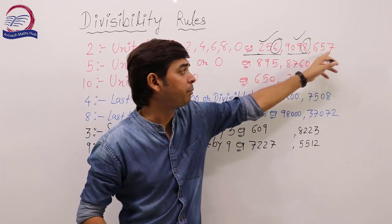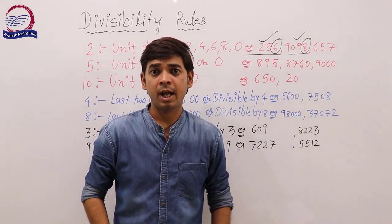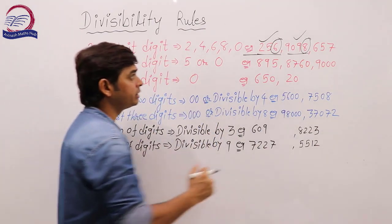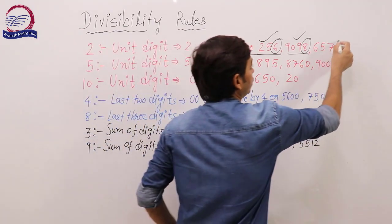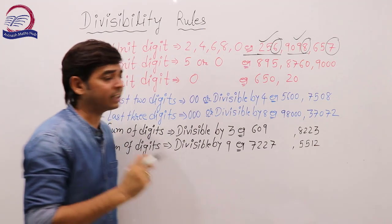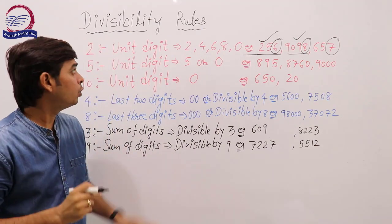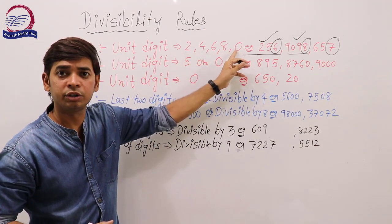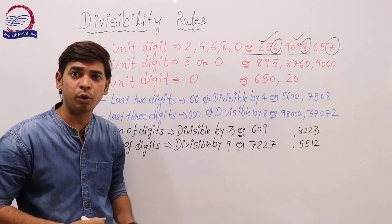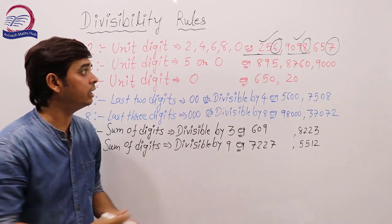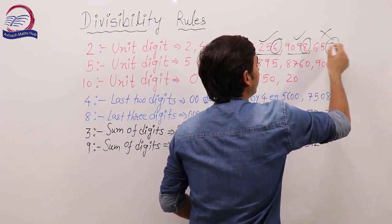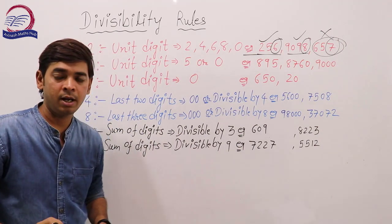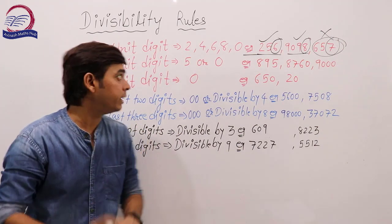Now take 657. Is this number divisible by 2? Again, check the unit digit. The unit digit is 7. Looking at our list — 2, 4, 6, 8, and 0 — 7 is not there. So this number is NOT divisible by 2.